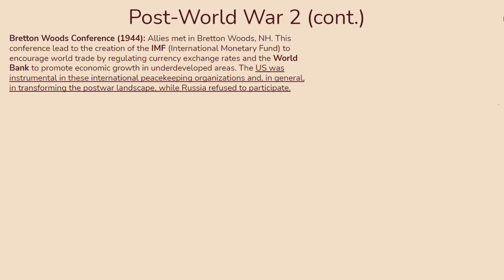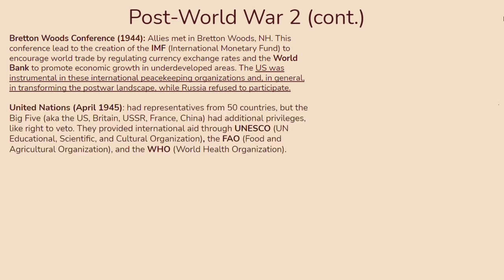The exception to Russia's otherwise isolationist foreign policy was the United Nations, formed in April of 1945. It had representatives from 50 countries, but the big five — the US, Britain, the USSR, France, and China — had additional privileges like the right to veto. The UN also provided international aid through UNESCO, the FAO (Food and Agricultural Organization), and the WHO (World Health Organization).